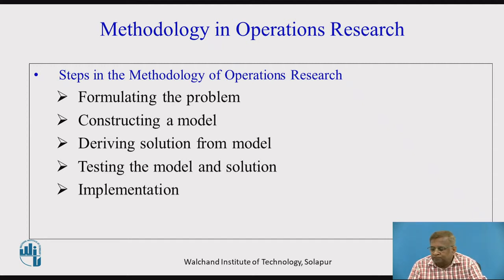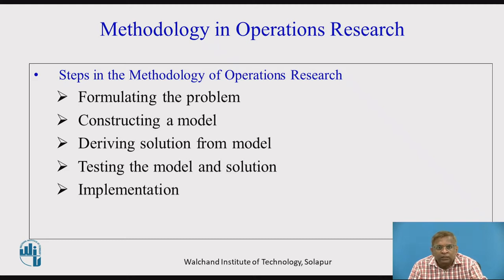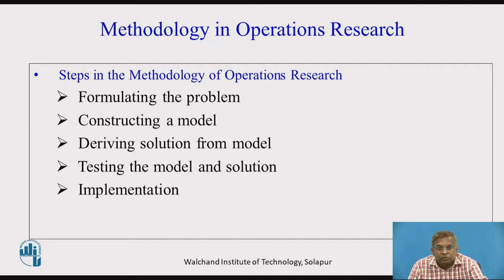Second is constructing a model. For a given situation, you can think of which model suits more, and the data available — the precision of the data available, the nature of data available — is it known exactly, what part of it is deterministic, that is known exactly, or what depends on probability. Considering all these aspects of data availability, you can then decide on a particular model and convert your real-life situation into an OR mathematical form, which we call constructing an OR model in mathematical relationship form.